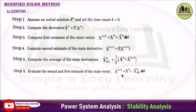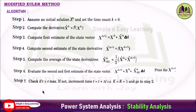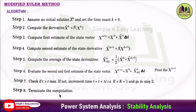Now evaluate the second and final estimate of the state vector: x power k+1 equal to x power k plus x-dot average into delta-t. Print the value of x power k+1. Then check the limits — check if t is greater than t-max, whether the maximum time count has occurred. If not, increment the time count: t equal to t plus delta-t, that is k equal to k+1, and go to step 2 to compute the derivative again. This continues until convergence occurs. When t is greater than t-max, terminate the computation. This is the general algorithm of the modified Euler's method.